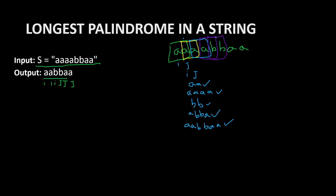We continue decrementing i and incrementing j. We get A, A, B, B, A, A — this is the longest palindrome from the example. If we try to increment j further, j goes out of bounds. Then we move to the next box with B, A — you can check all those combinations yourself, but you won't get a maximum palindrome from that box. And this AABBAA is our final output.